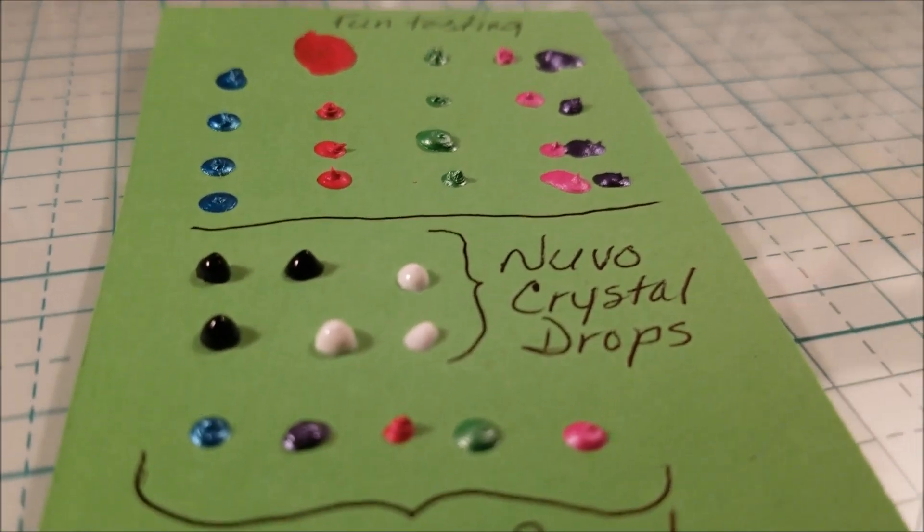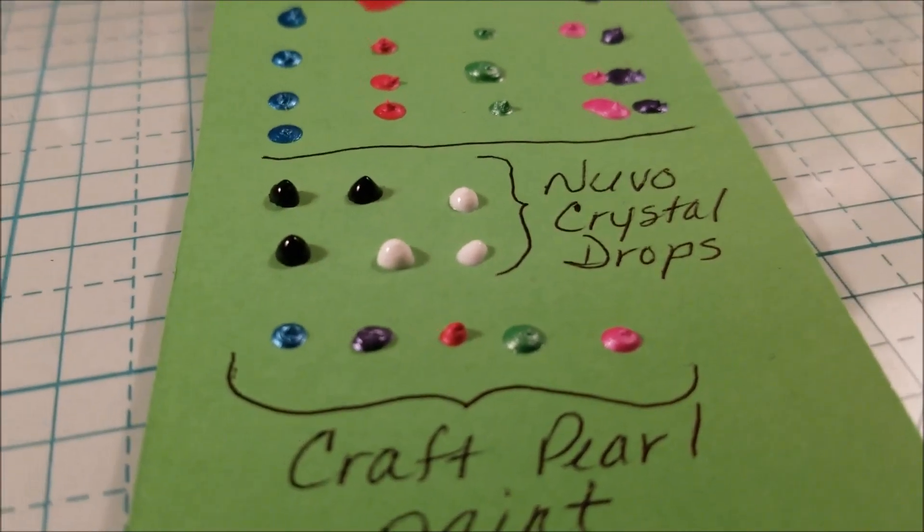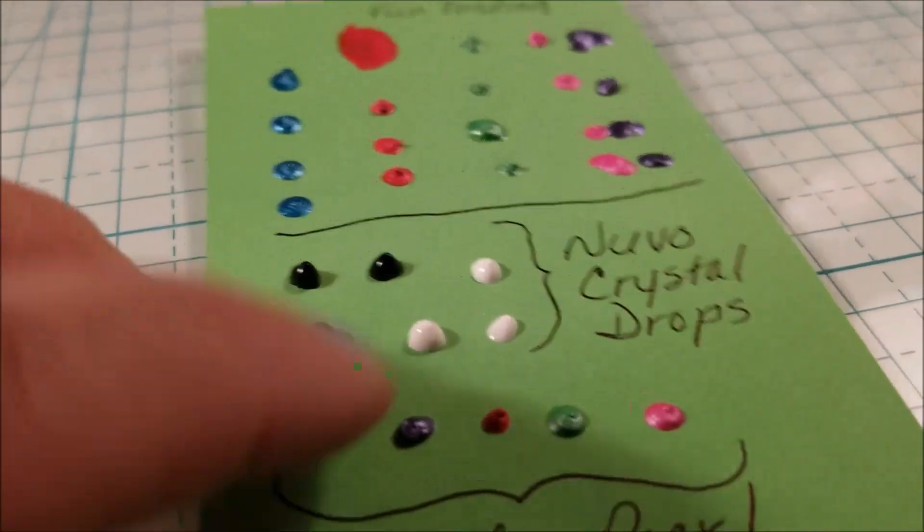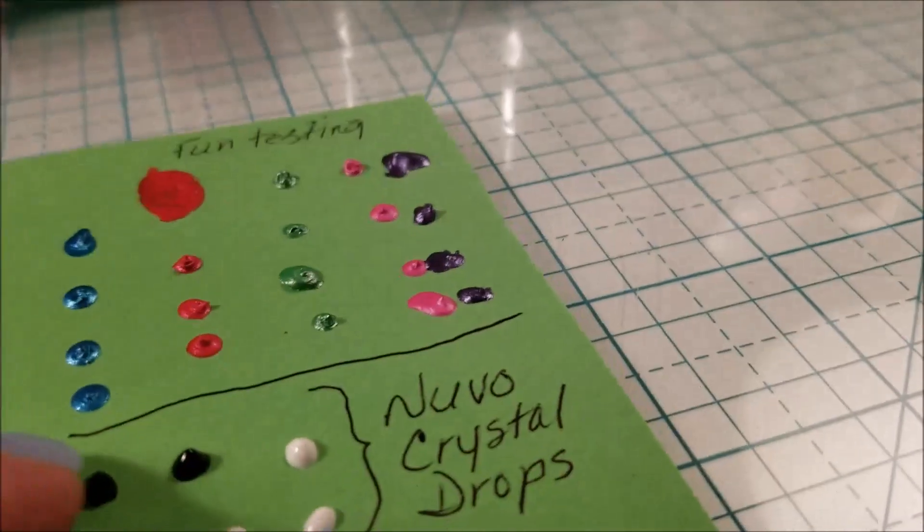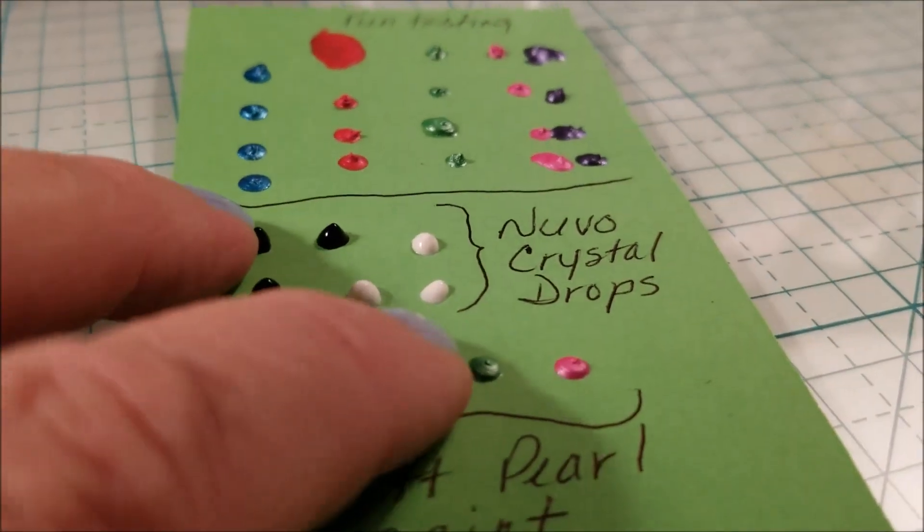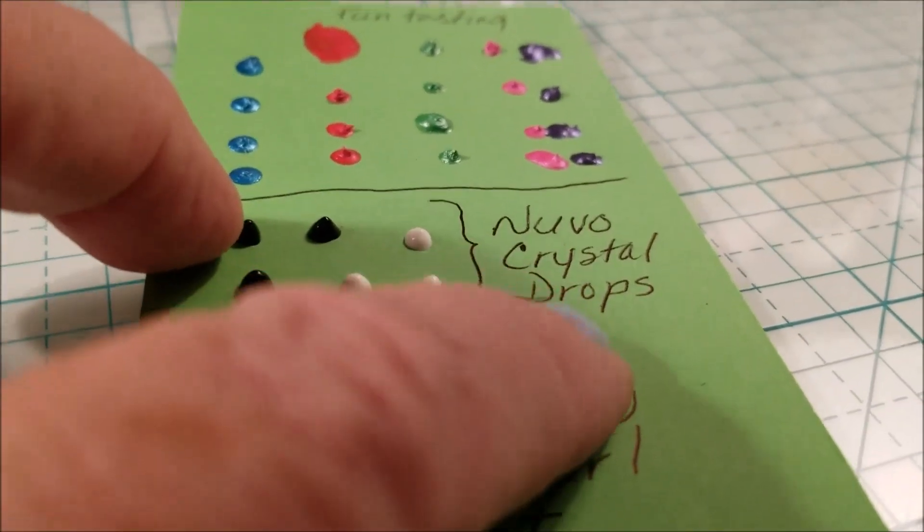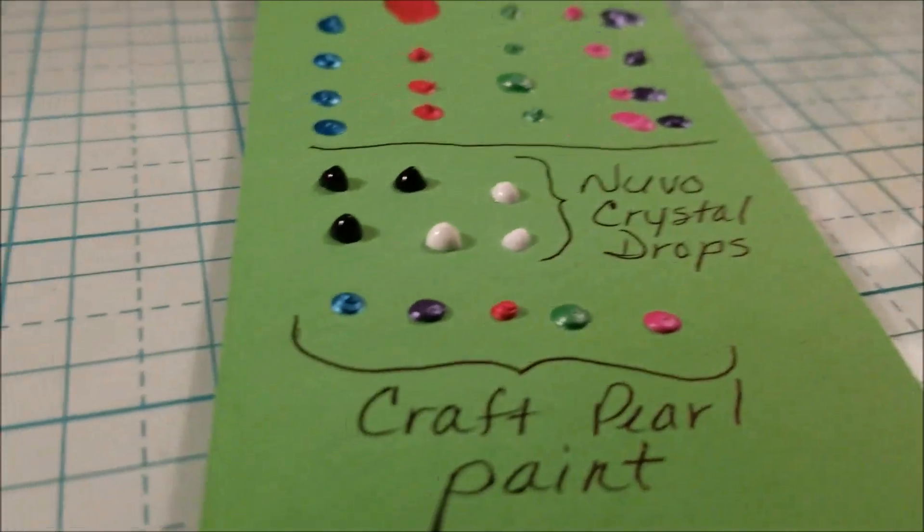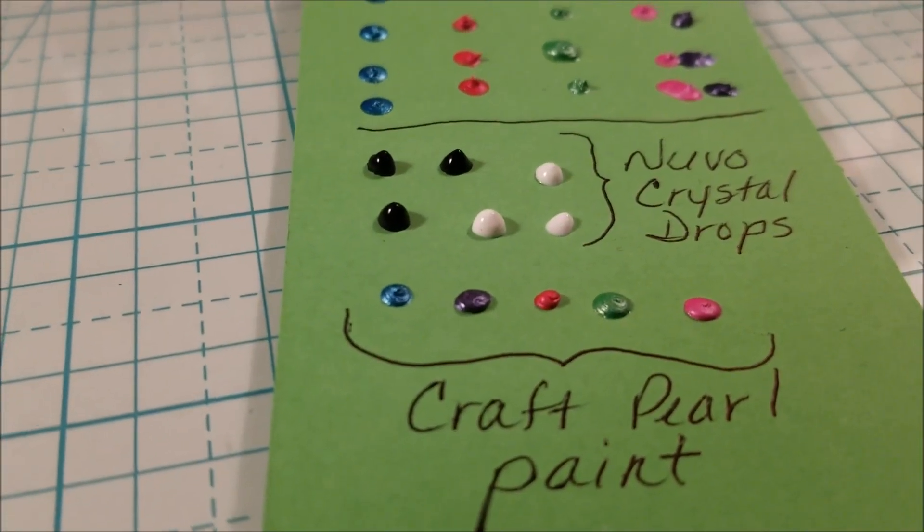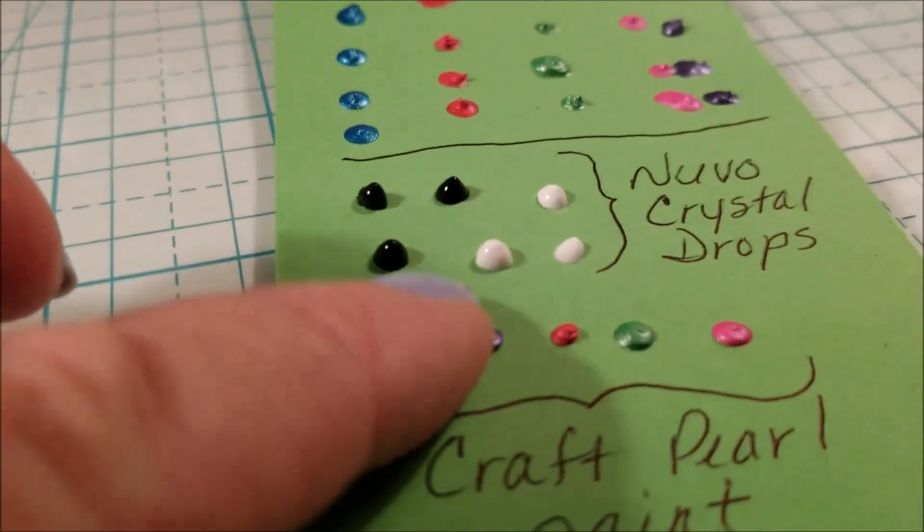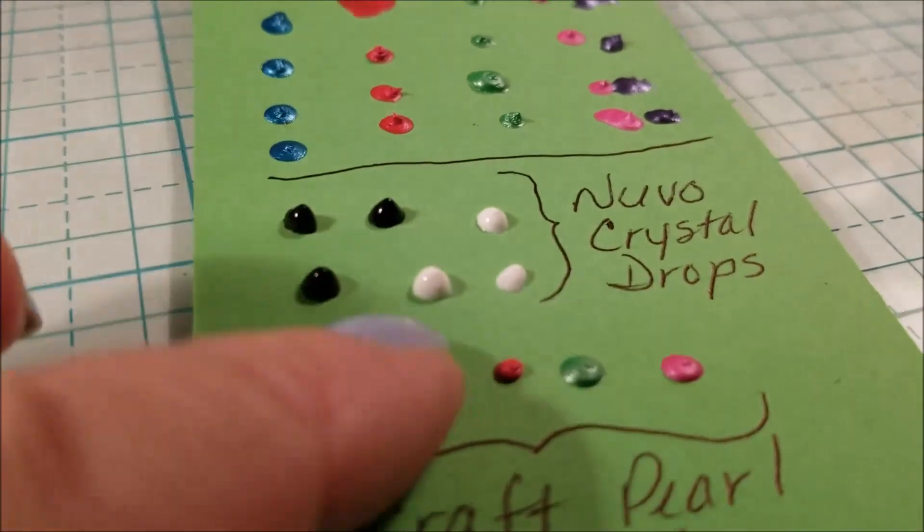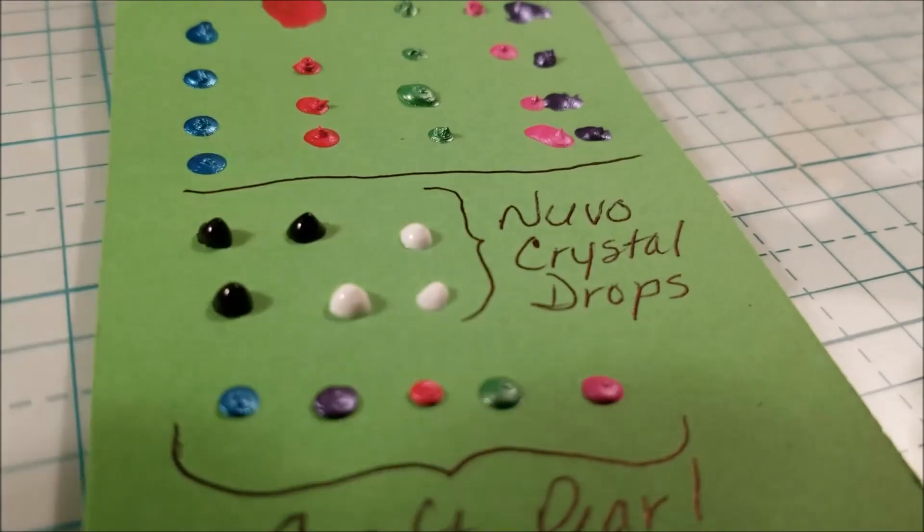And then these are the craft pearl drops. Trying to get that to focus here. You'll see how they've sort of flattened right out and actually they're still a little soft. Kind of a little soft, so I've even flattened them even more. I don't know if I did them wrong.